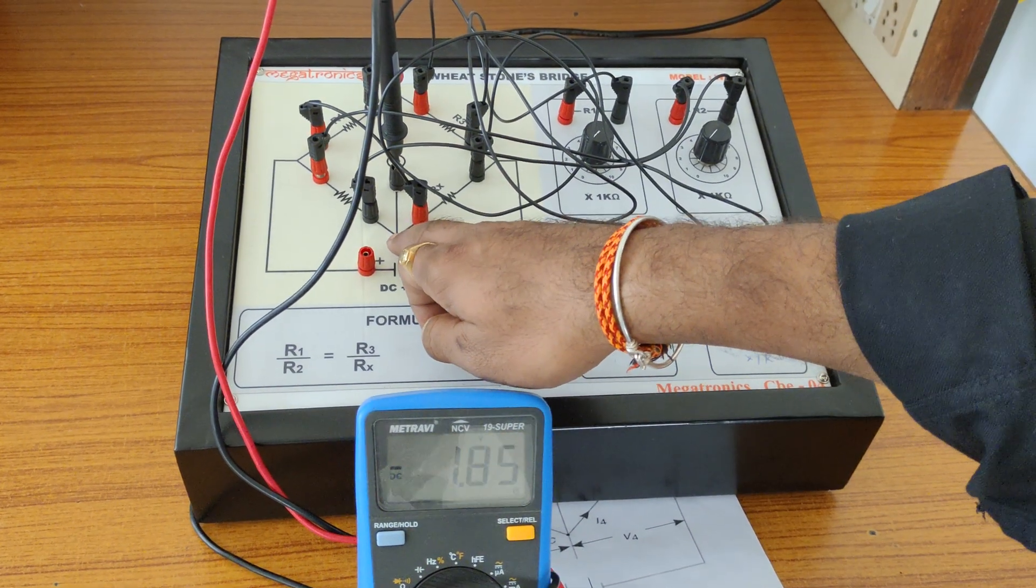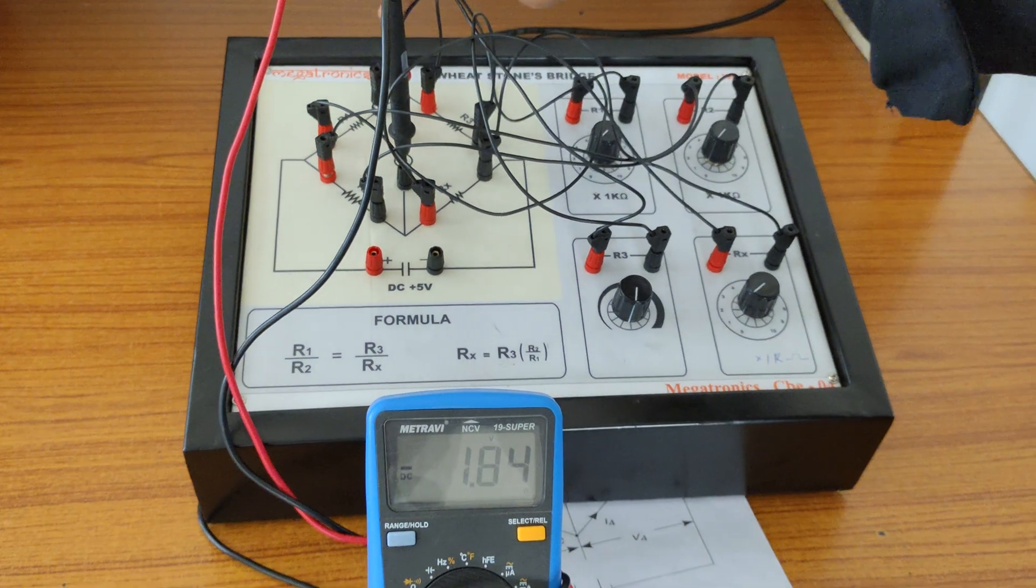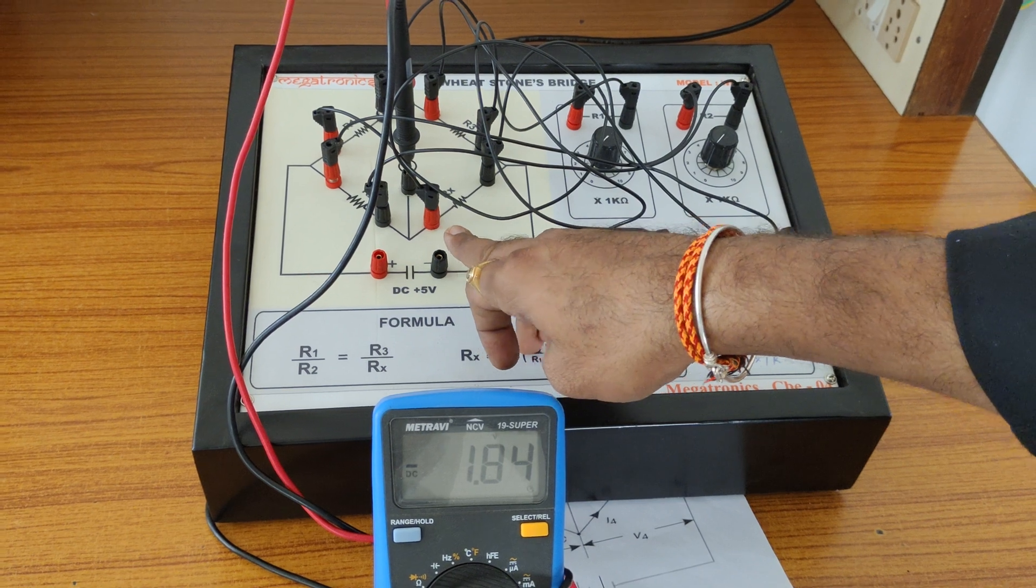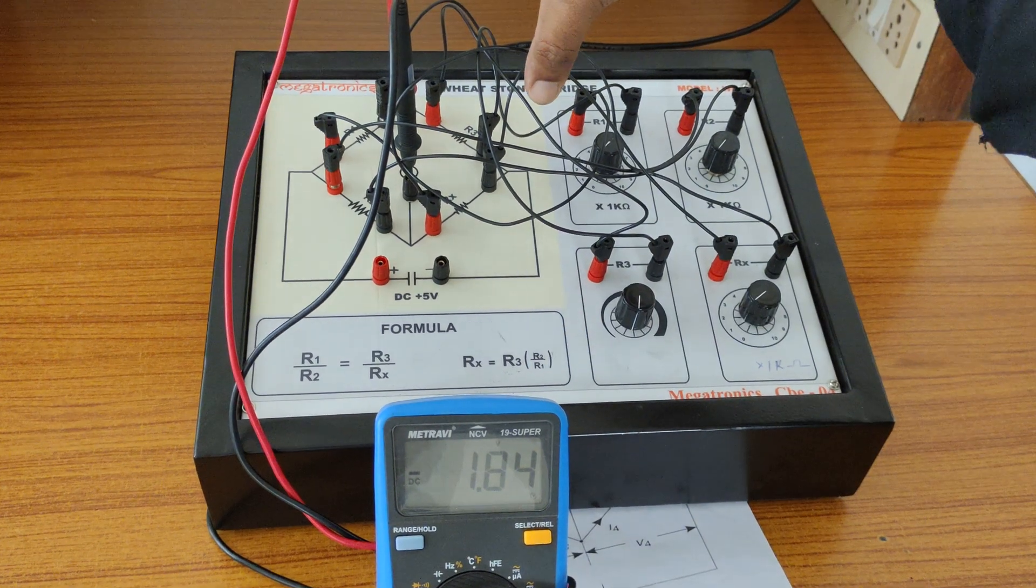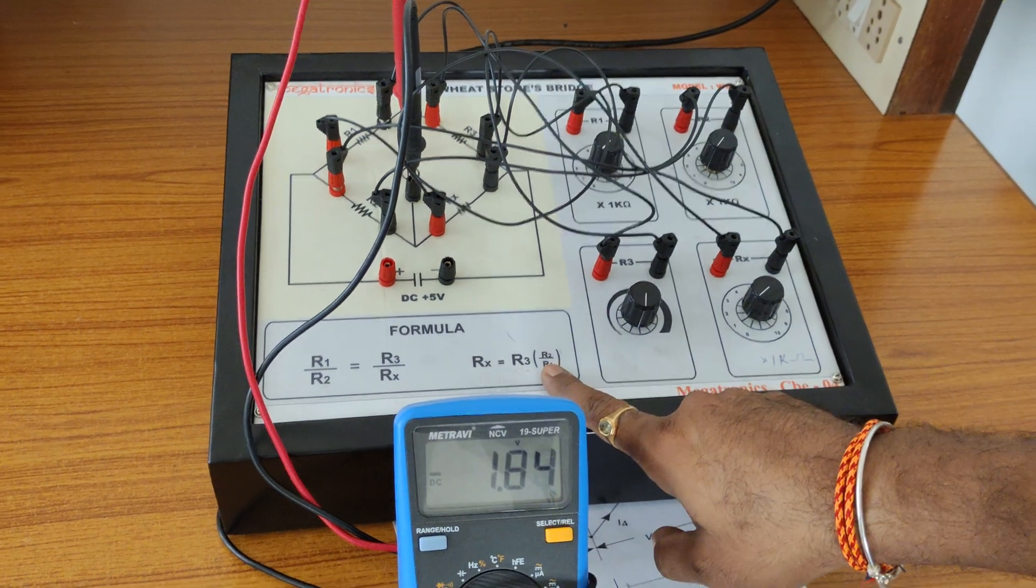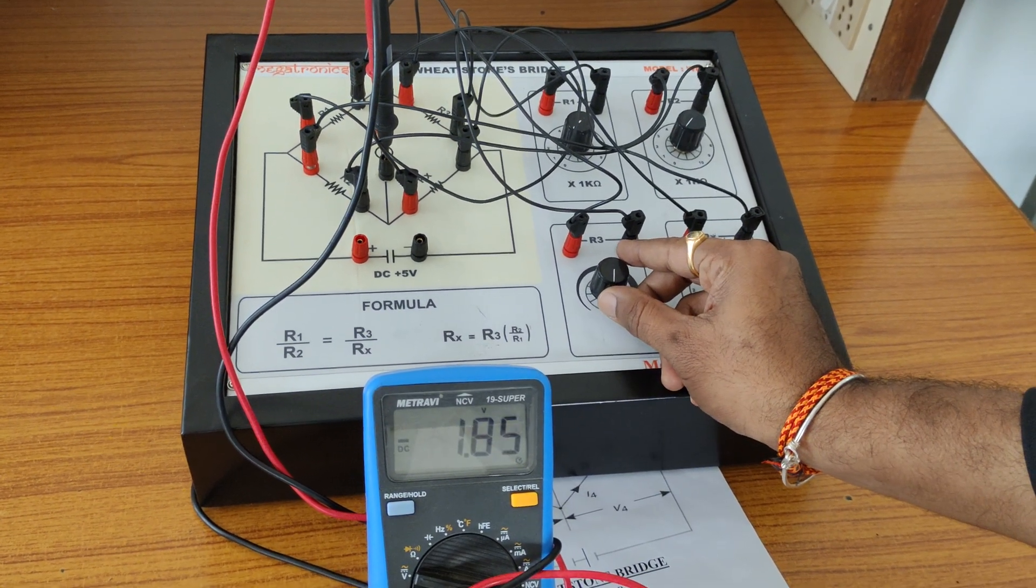Then the same current will flow across this R1 and R3. This R2 and Rx is also the same. Then we can observe the product of these two arms is equal to product of these arms. Then we can have this formula if and only if the bridge is in balance.